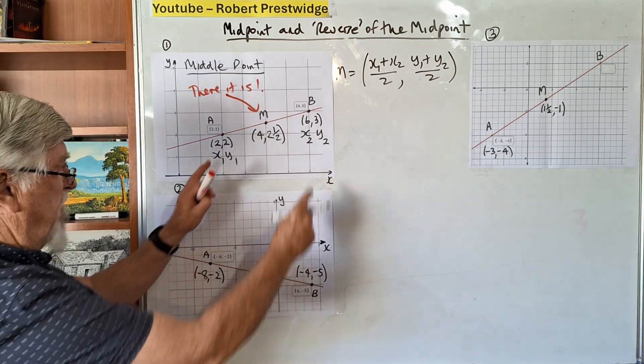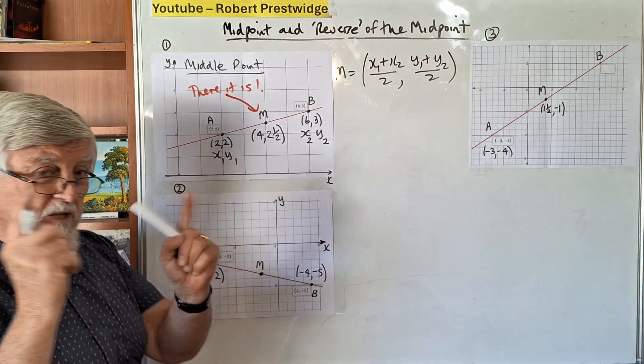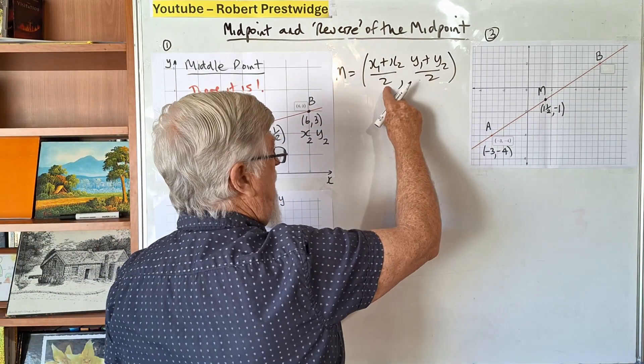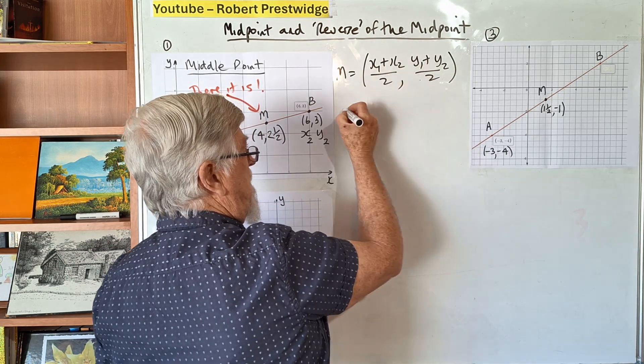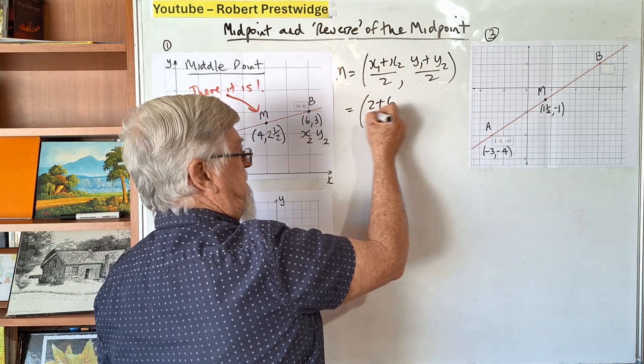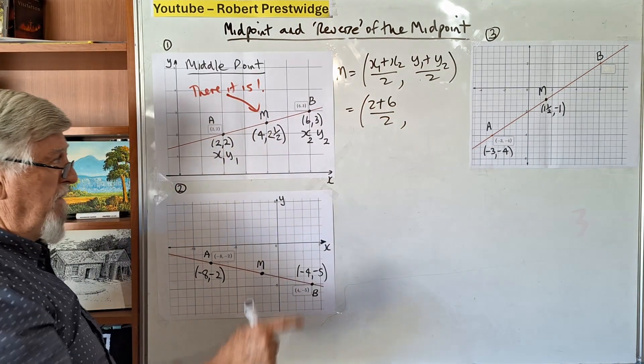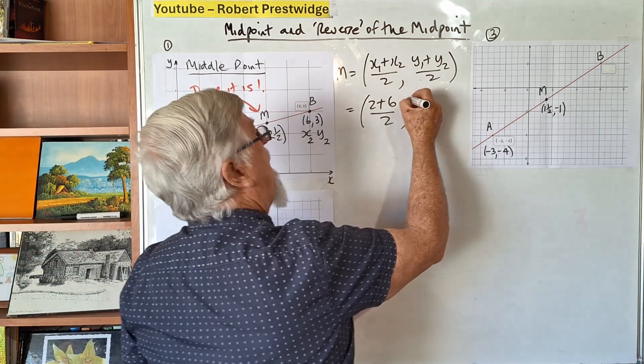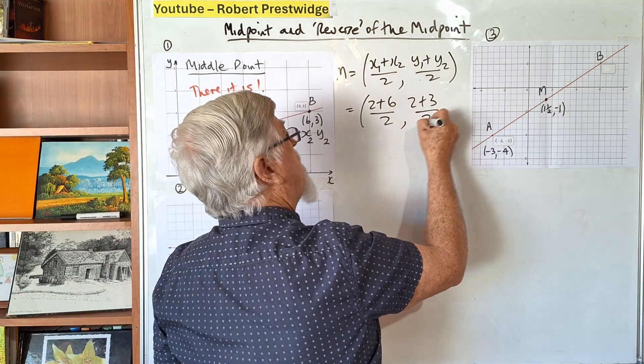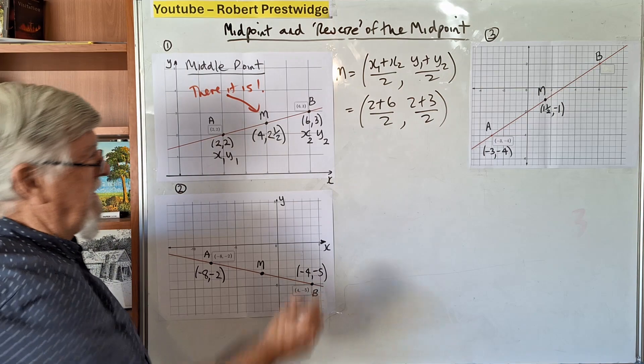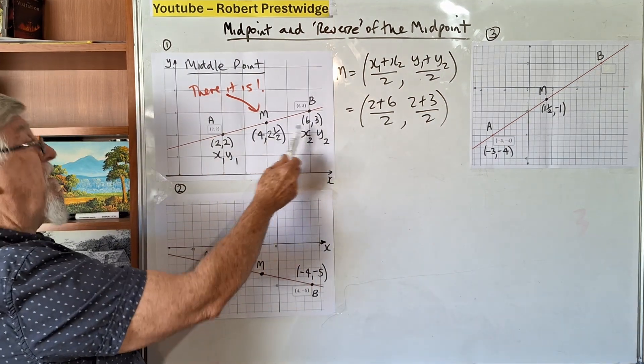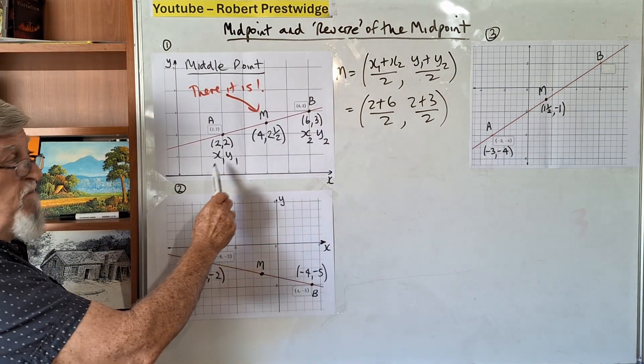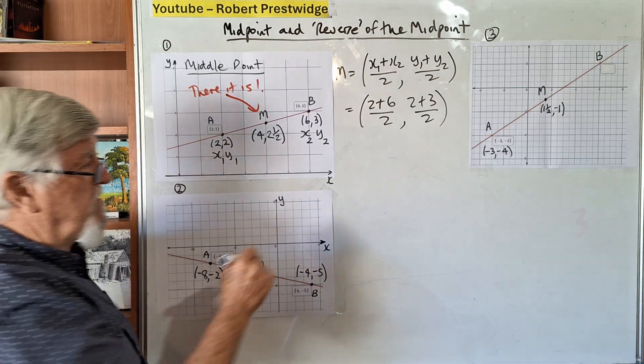The formula is M equals (x₁ + x₂)/2, (y₁ + y₂)/2. Does it matter which way I label them? No, it makes no difference at all. So halfway between 2 and 6, I put 2 plus 6 in and divide by 2, then 2 plus 3.